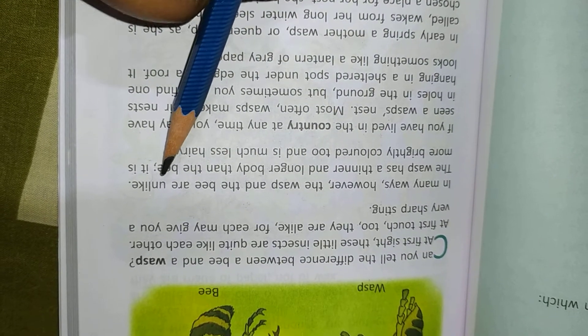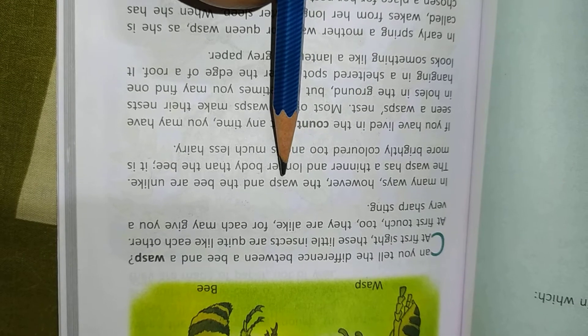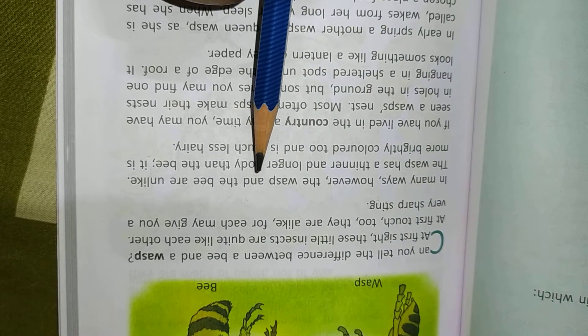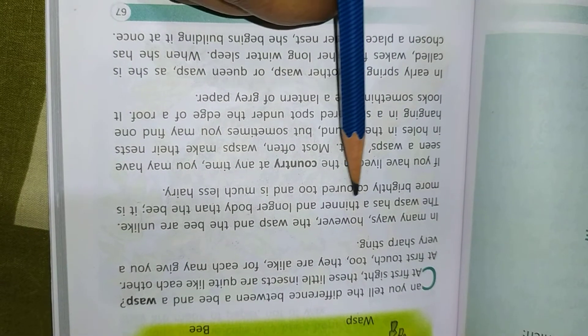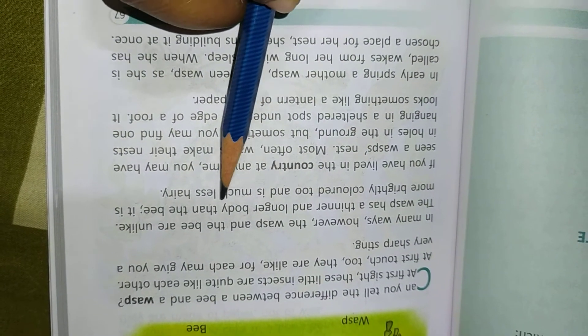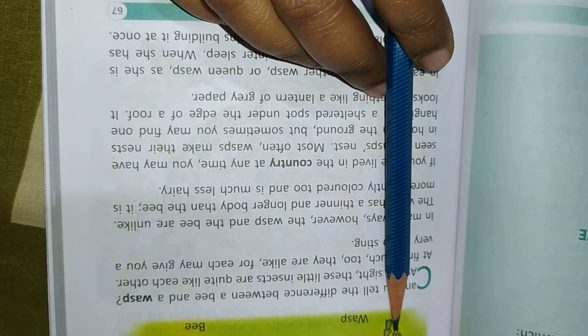However, the wasp and the bee are unlike in many ways. The wasp has a thinner and longer body than the bee.